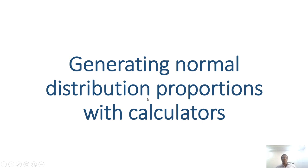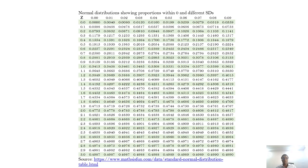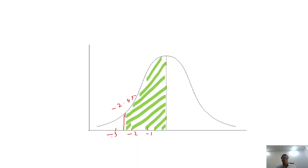Hi, in this video we will look at how to generate normal distribution proportions with calculators. Commonly this kind of table can be used to generate those proportions, but sometimes you may not have this table. So if you have your calculator, you can generate the proportions with ease. For instance, we want to know the proportion of scores between the mean and 2.45 standard deviations below the mean.